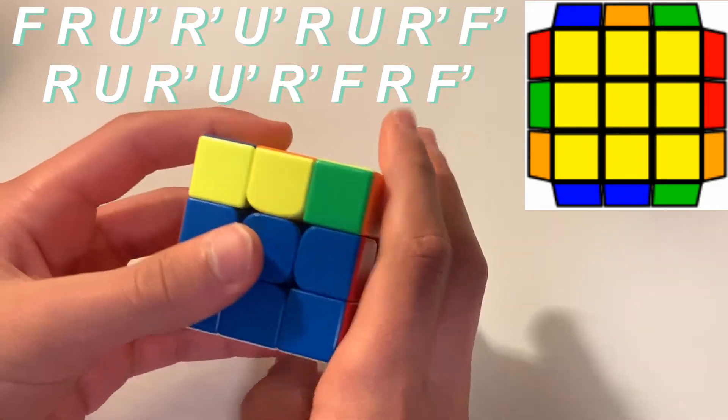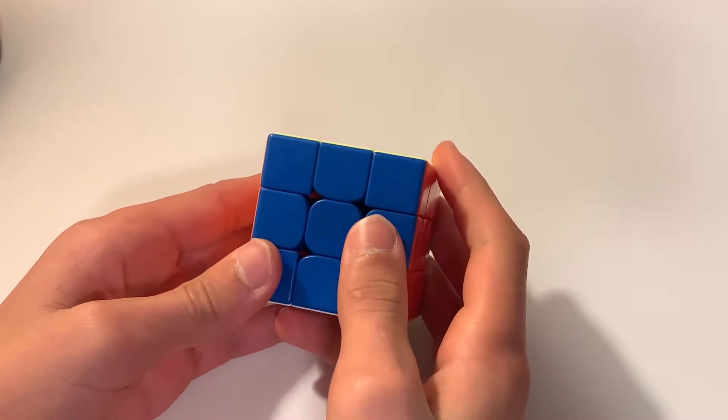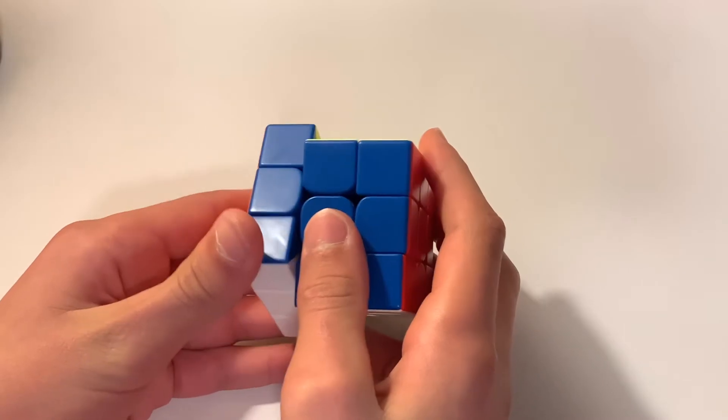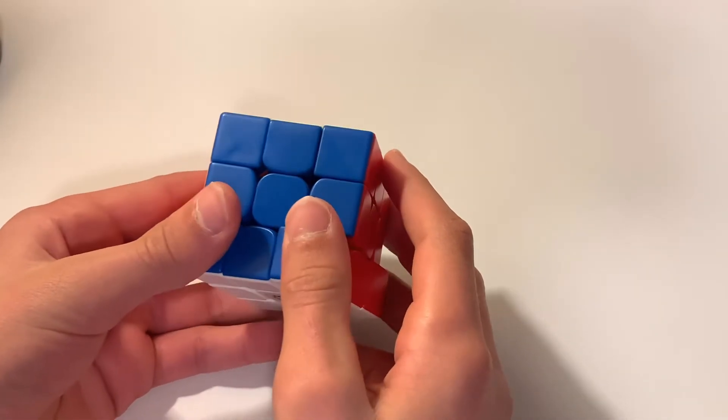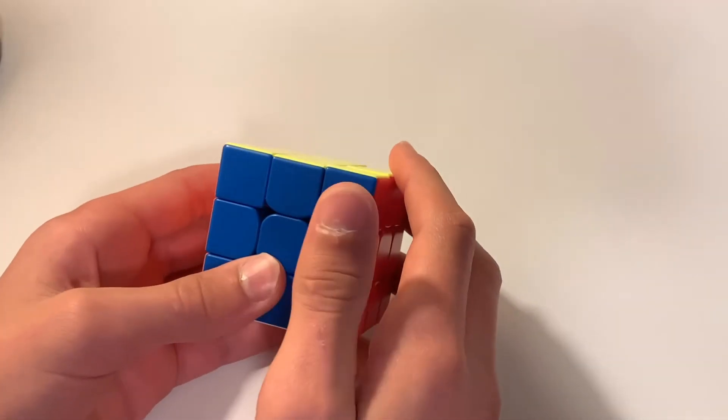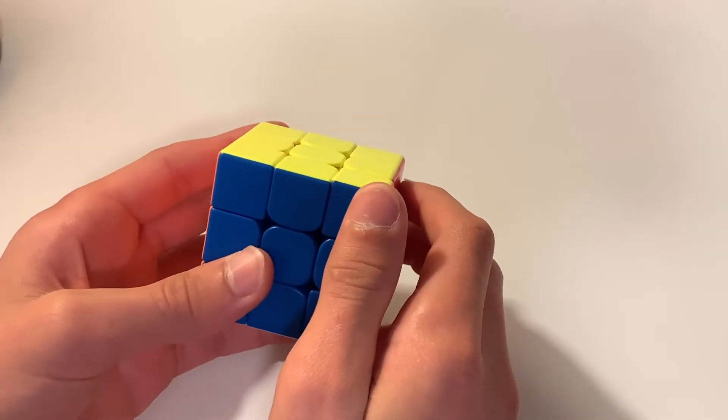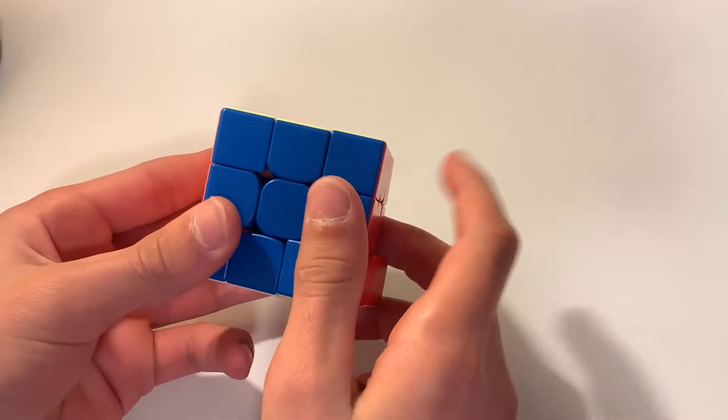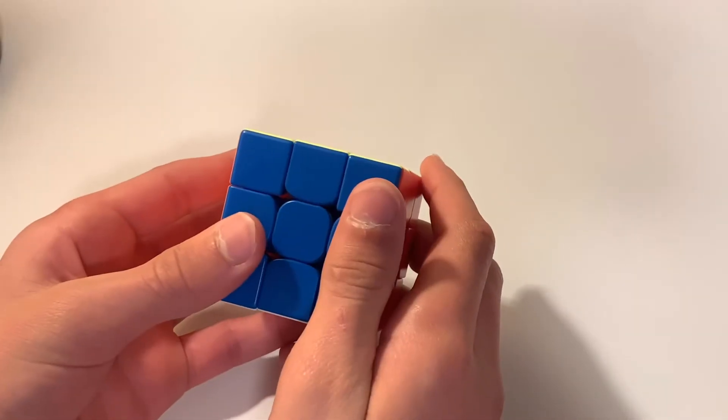But otherwise, it's pretty easy to execute the Y perm. Hey guys, thank you for watching this video on how I taught you guys how to do the Y perm with the right finger tricks. If you have any other questions, please put them down in the comment section below. And if you have any comments or if you like the video, please give it a fist bump and a like. So the playlist will be linked in the description of the other PLLs so you guys can make sure to check that out if you haven't already. And please be sure to subscribe and I hope to see you guys next time.